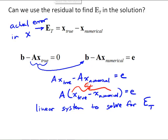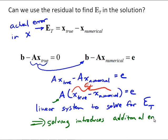But the problem is, solving that system, especially when we're really interested in the error, A might be an ill-conditioned matrix. Solving the system uses that coefficient matrix again, and it introduces additional error. So, not a good idea.